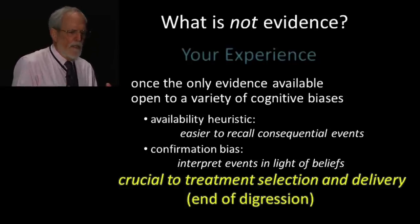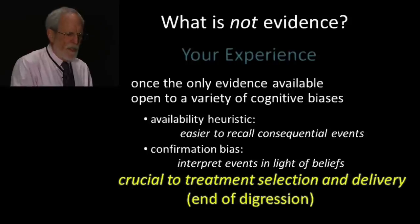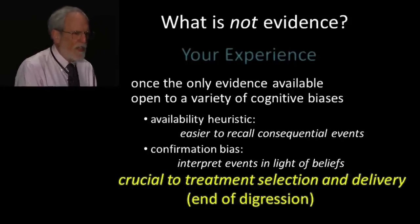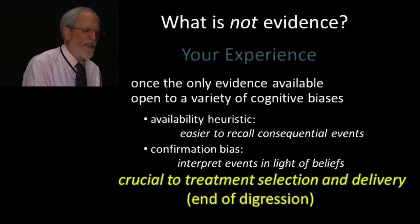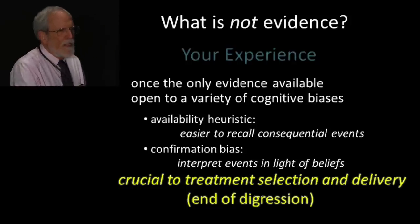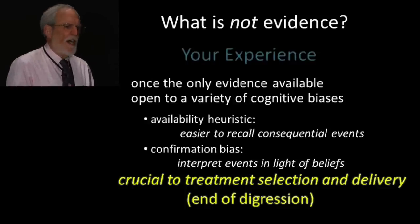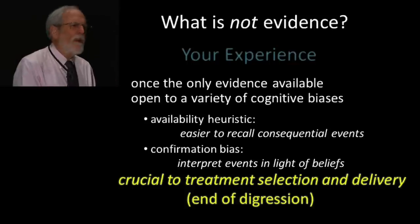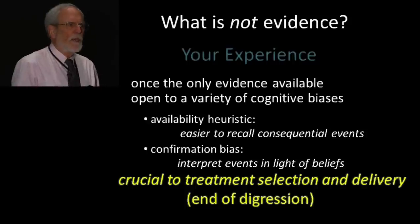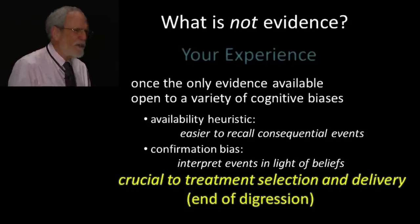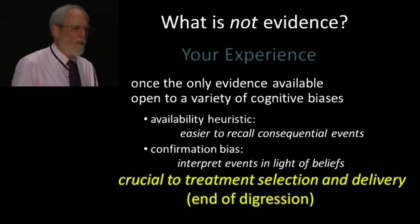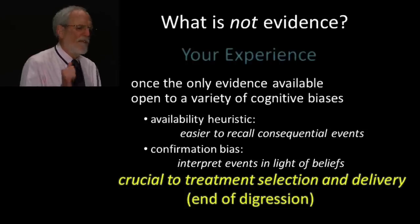One cognitive bias is called the availability heuristic: it's easier to recall consequential events than inconsequential ones. For example, say you put a sealant on your colleague's daughter's tooth and three years later it blows up. You're going to remember that sealant far better than the 2,000 you placed that didn't blow up. So when someone asks you about sealants, you might say they don't always work very well — because that one molar is what comes to mind. But in fact, sealants work extremely well.